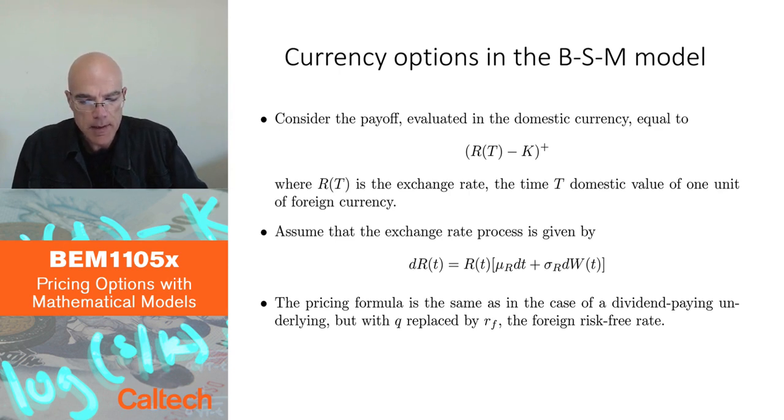So the claim is that the same as for a forward contract on currencies, on an exchange rate, the same formula will hold as for a dividend-paying stock, except instead of the dividend rate, we are going to plug in the interest rate of the foreign, the risk-free rate of the foreign bank account, denoted by r subscript F.